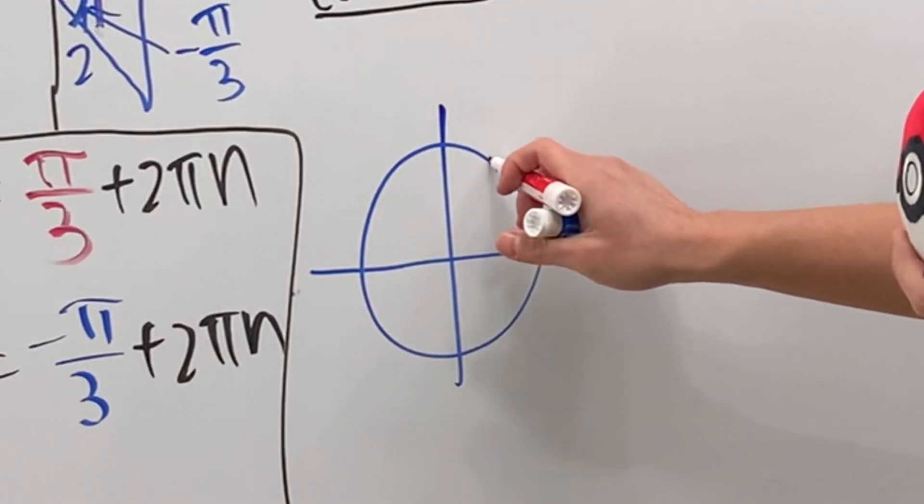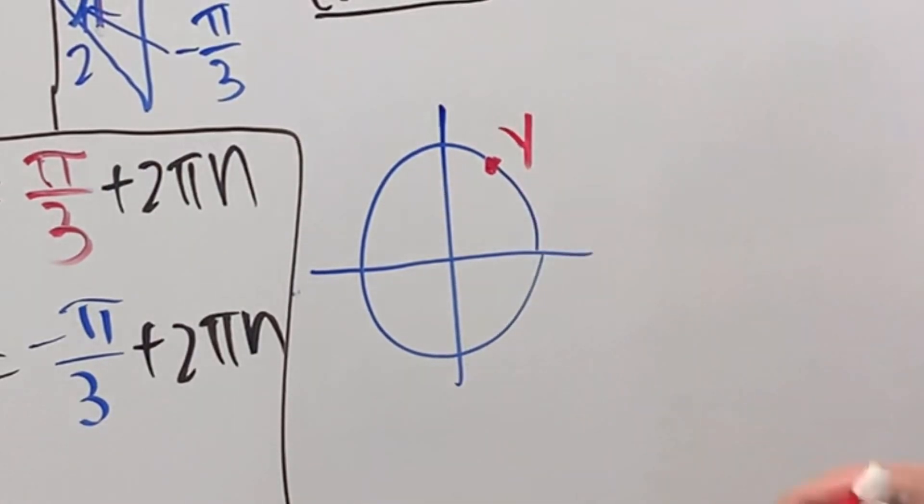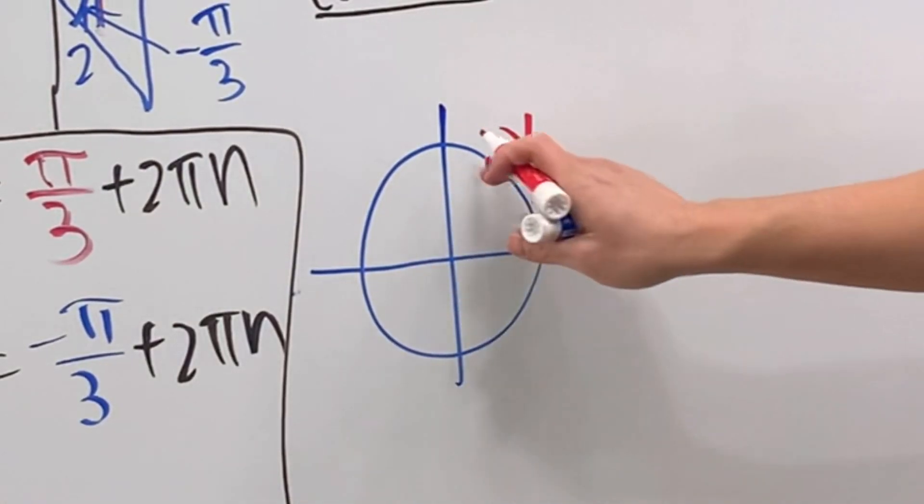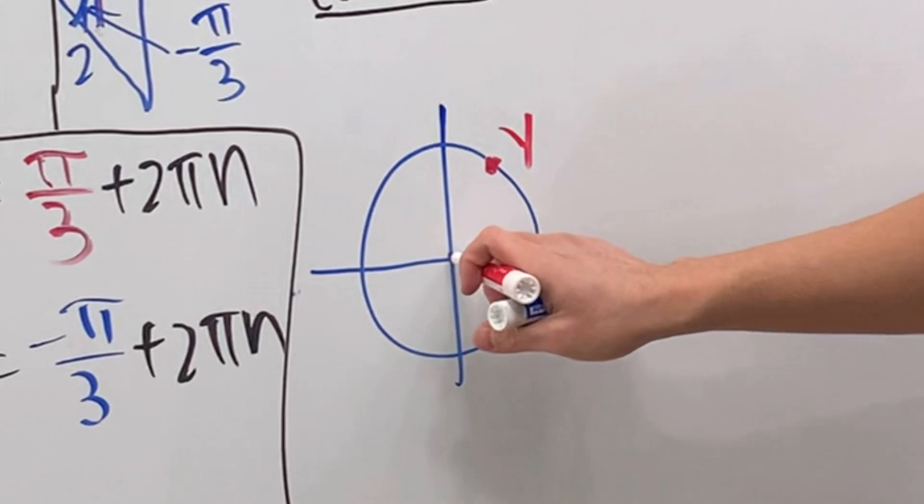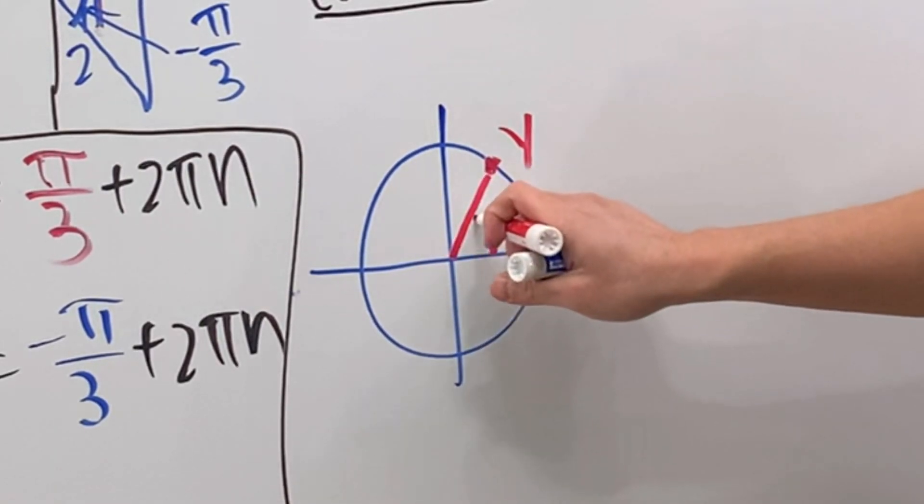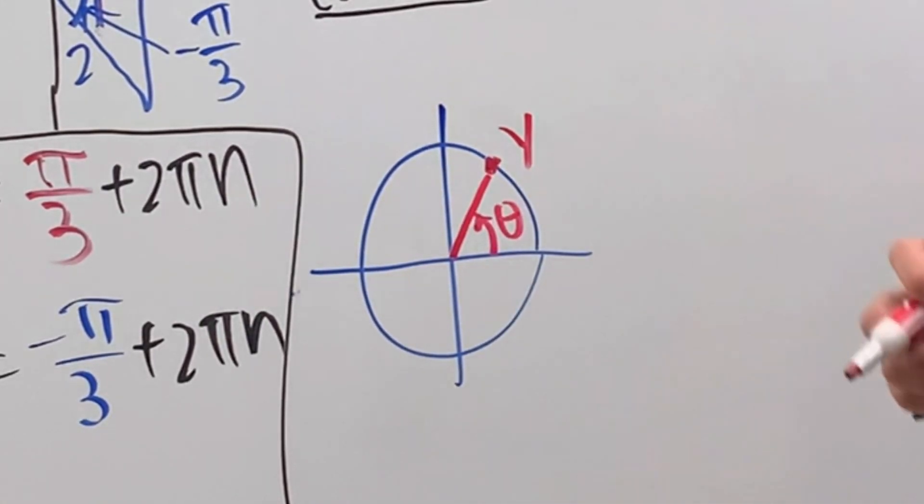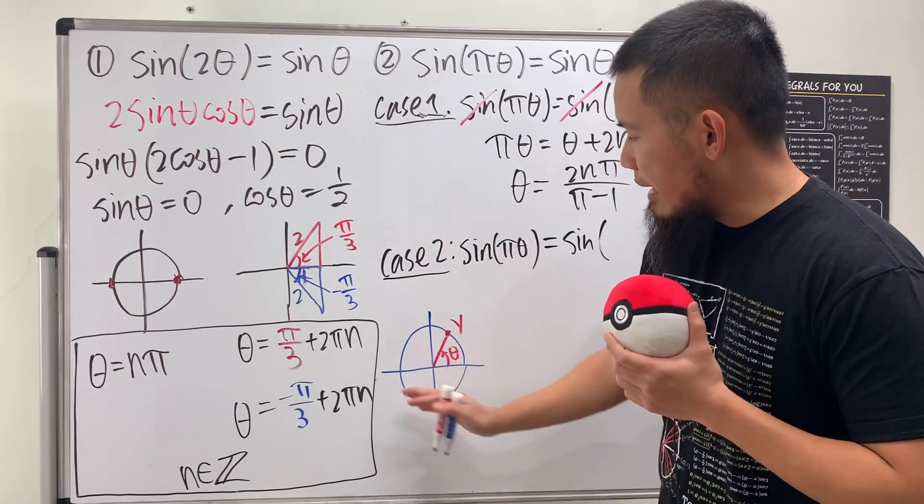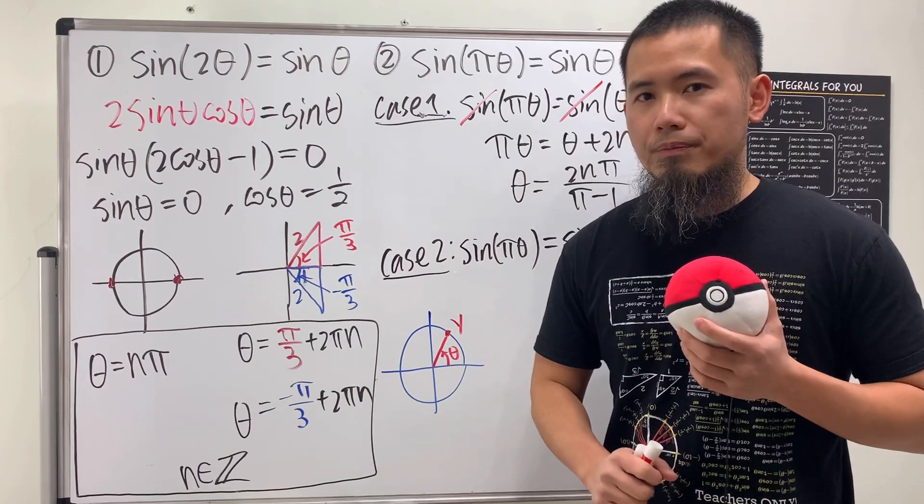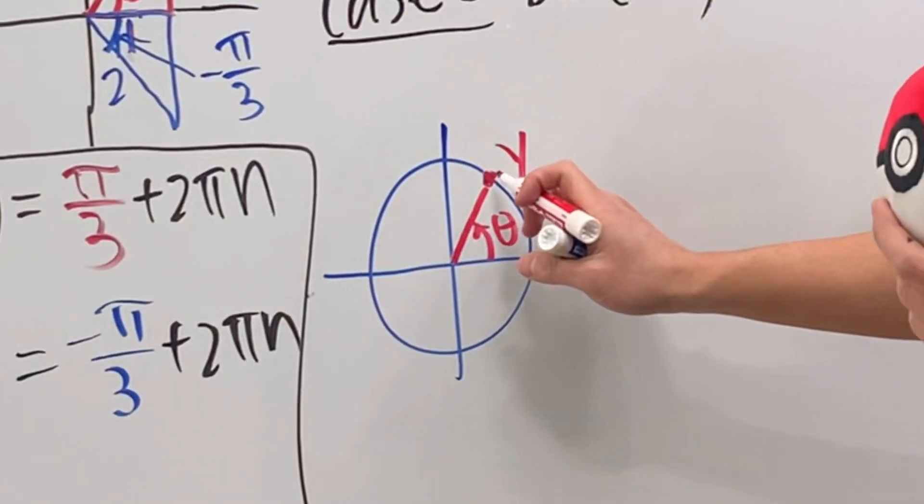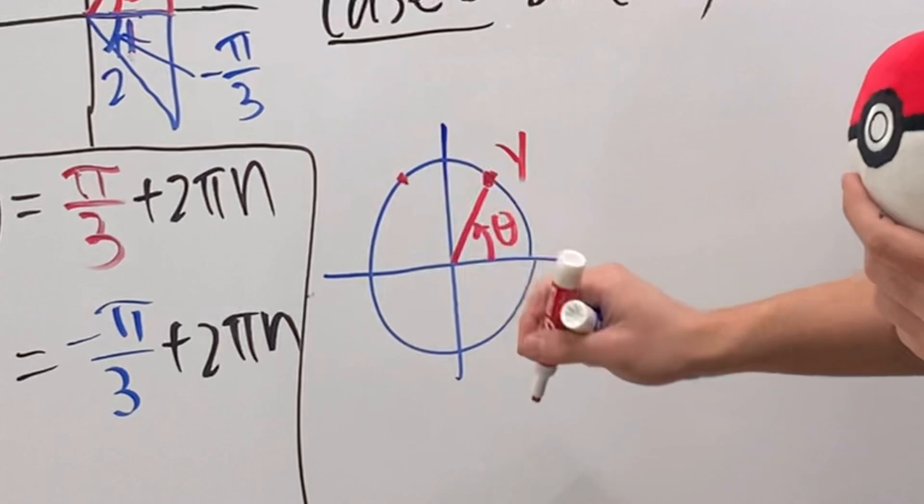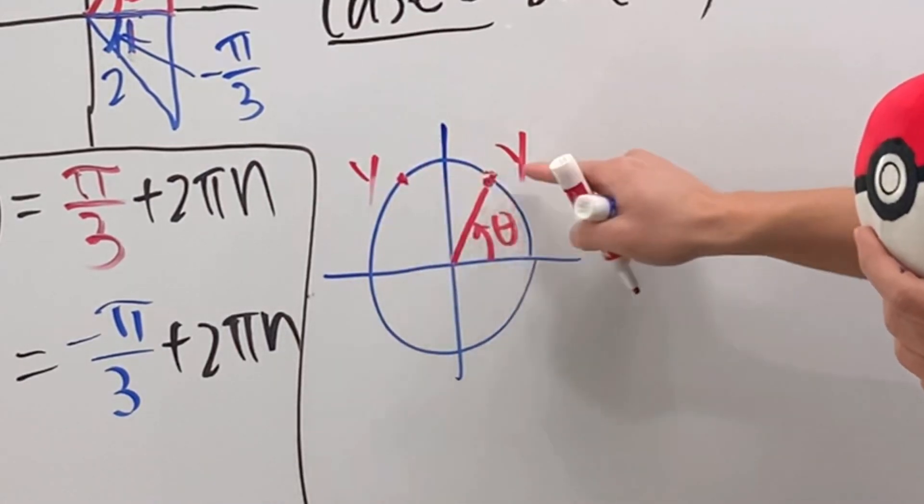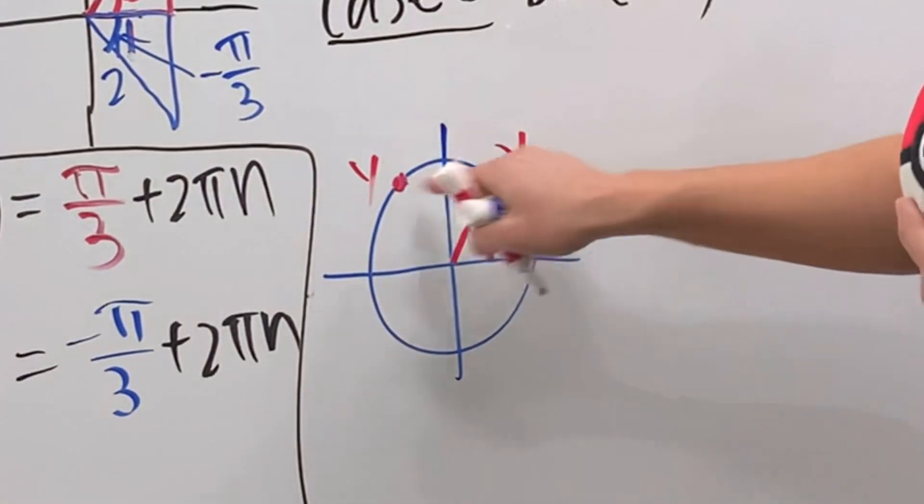Again, sine is the y value. So let's say we have this point right here with the corresponding y value here and we have the angle. Let's say from here to here is theta. Good. Well, can you think about if there's any place that has the same y value as well? Yes. It's just you go to the other side right here, right? They have the same y value. They are both positive y right here.